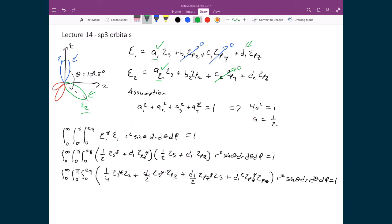I can now apply these integrals to these four terms. I know that 2s star times 2s, they're normalized, so that integral equals 1. 2s star times 2pz, they're orthogonal, so that integral equals 0. 2pz star times 2s is also 0 because they're orthogonal. 2pz times 2pz, they're normalized, that's equal to 1. So the result I'm left with is 1 quarter plus d1 squared equals 1. When I simplify this, I get d1 squared equals 1 minus 1 quarter, which equals 3 quarters.